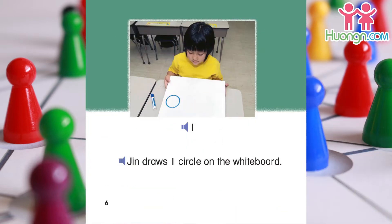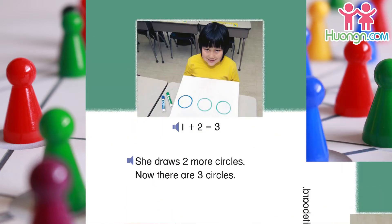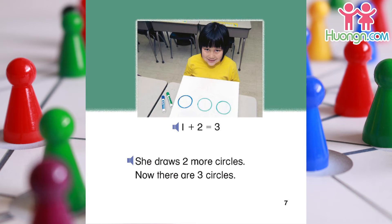Jin draws one circle on the whiteboard. She draws two more circles. Now there are three circles. One plus two equals three.